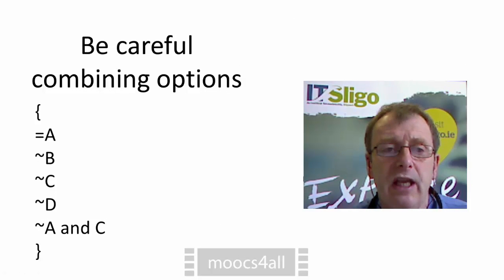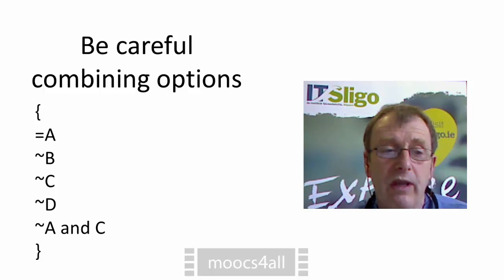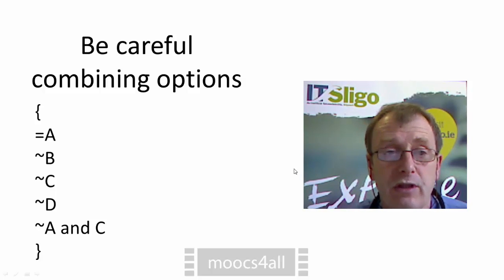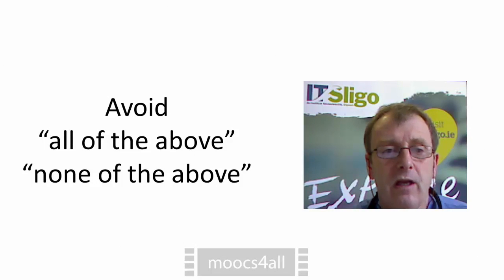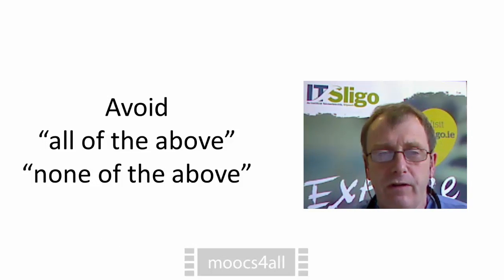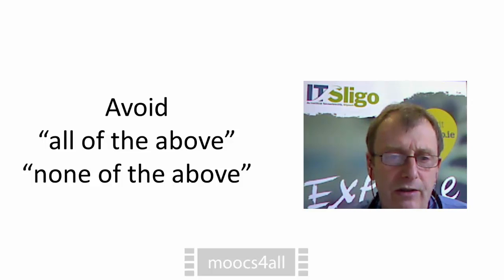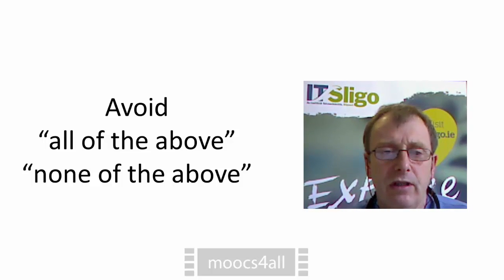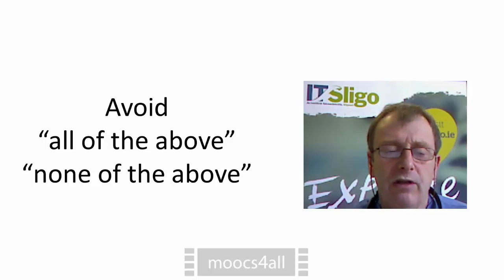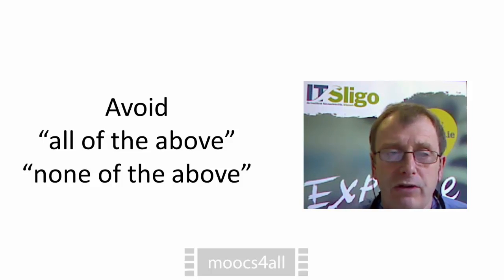Be careful when combining options, as this tends to attract students. If you are going to combine options, make sure you try to do all combinations so you're not showing any bias. Also avoid 'all of the above' and 'none of the above' — we all tend to use these just to add an extra option, but they attract students. Try instead to think of plausible distractors.